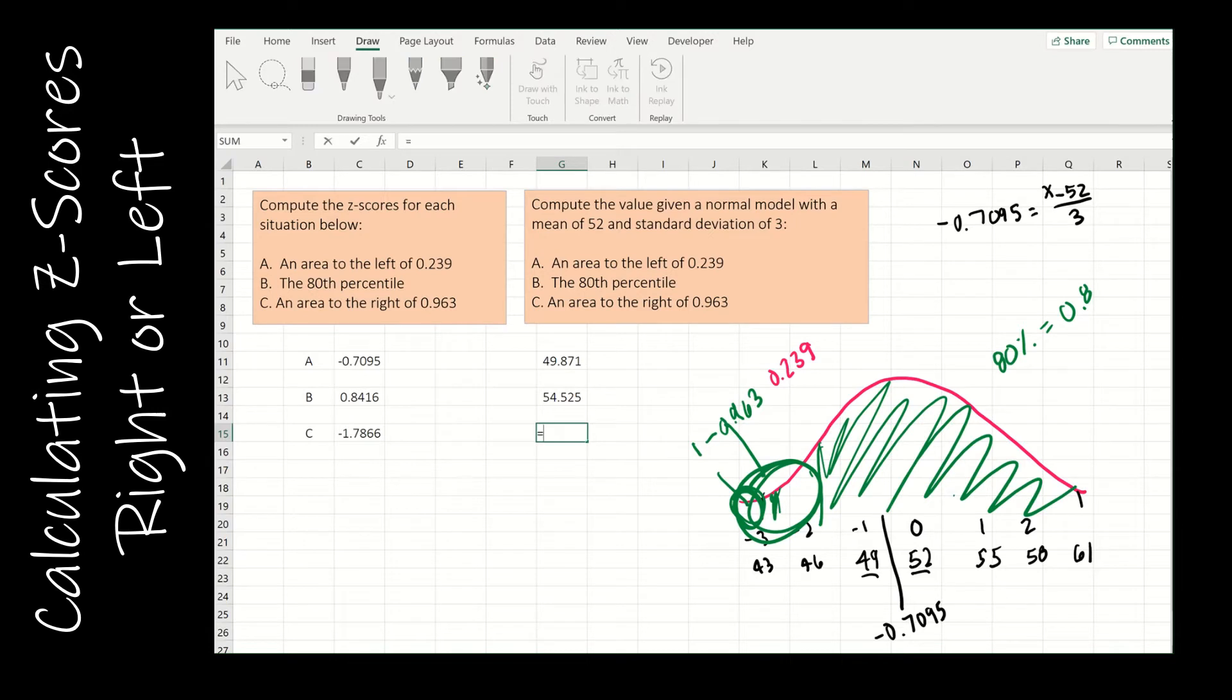I would do the same thing here, equals NORM.INV. Probability, 1 minus 0.963. The mean is 52. The standard deviation is 3. And now that's 46.4. And that makes perfect sense.